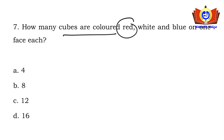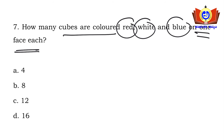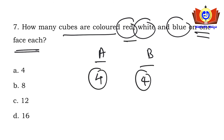How many cubes are colored red, white, and blue on one face each? From each cube — cube A and cube B — there will be 4 smaller cubes each that have red, white, and blue faces. So 4 + 4 = 8 is the answer.